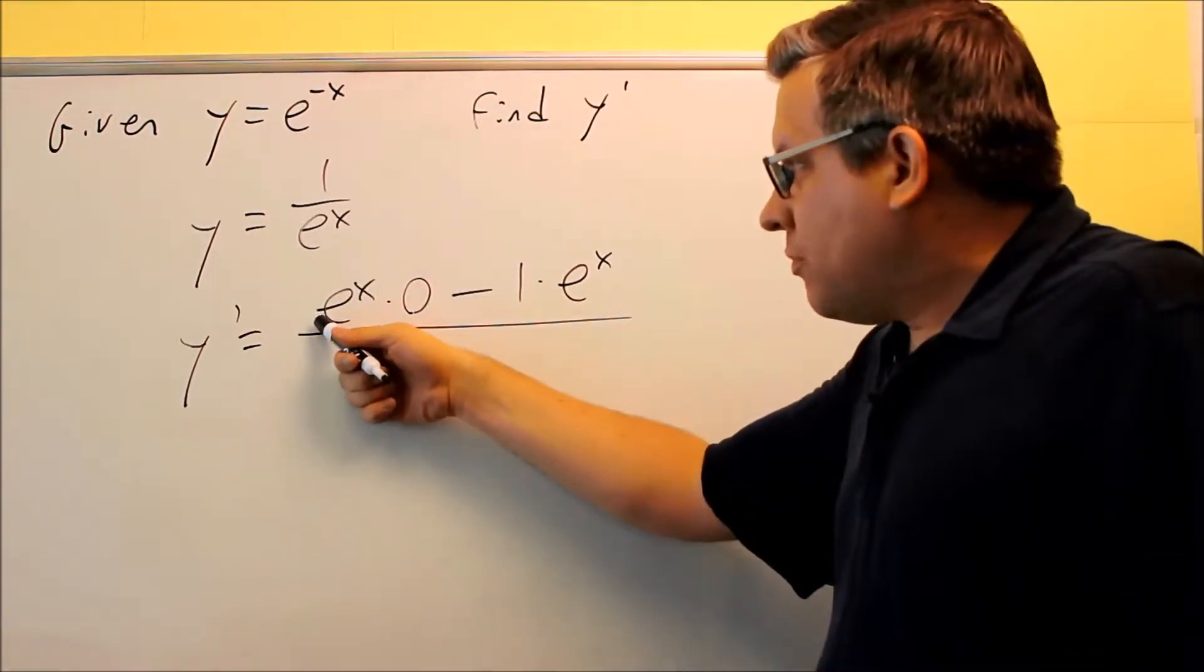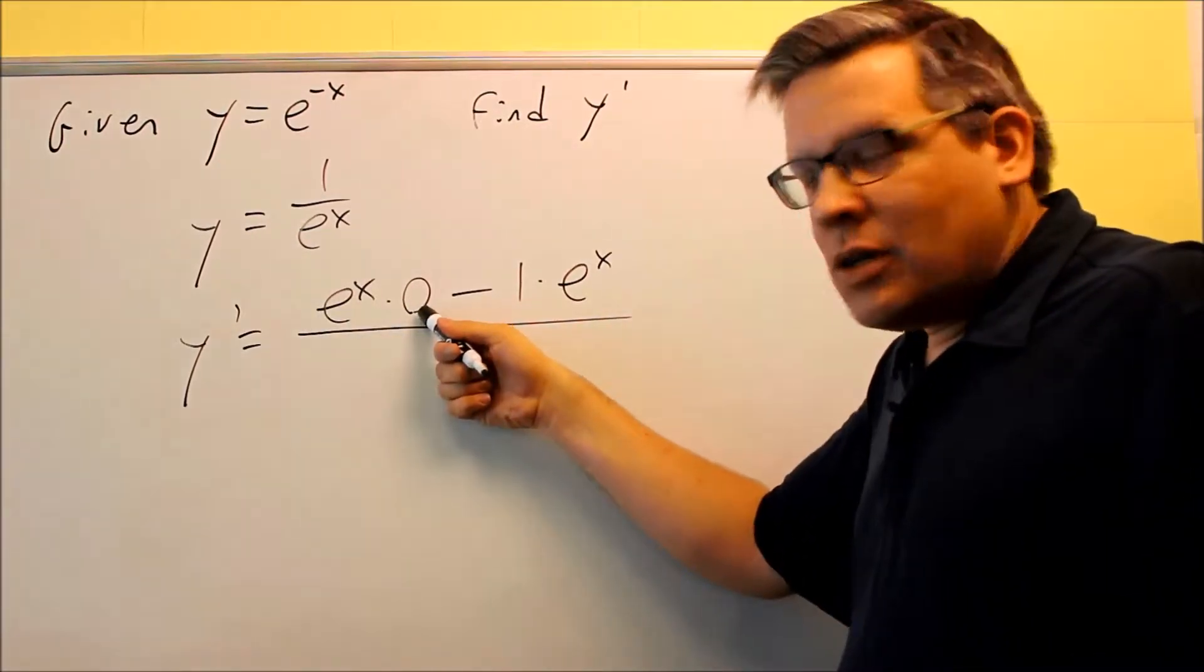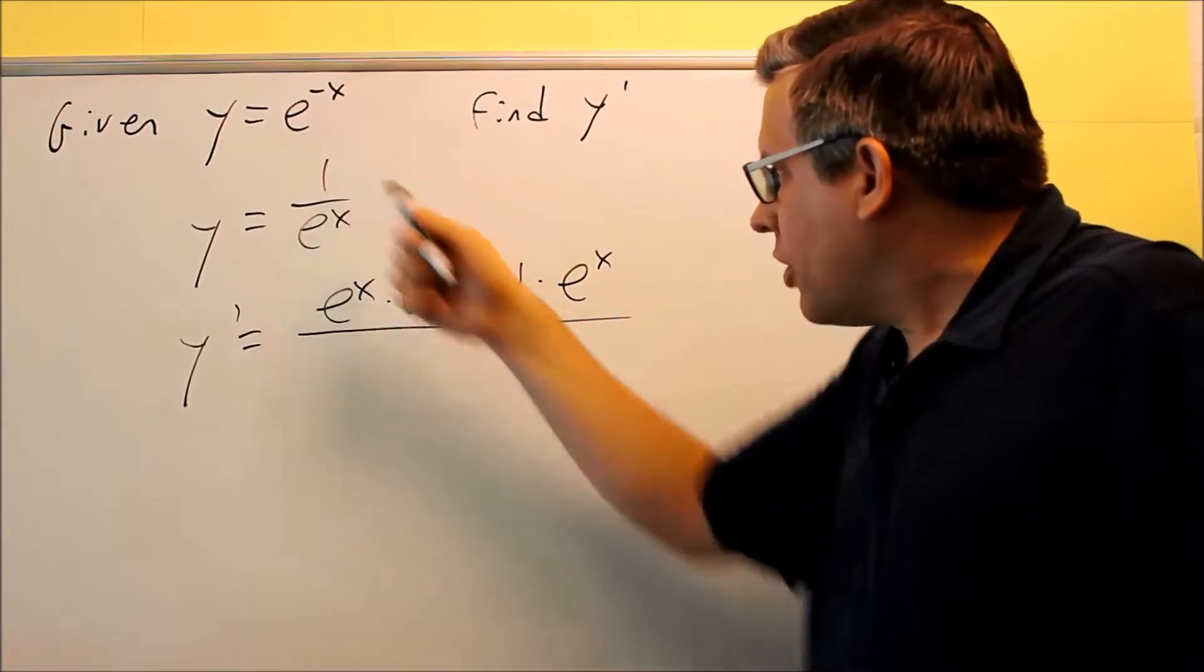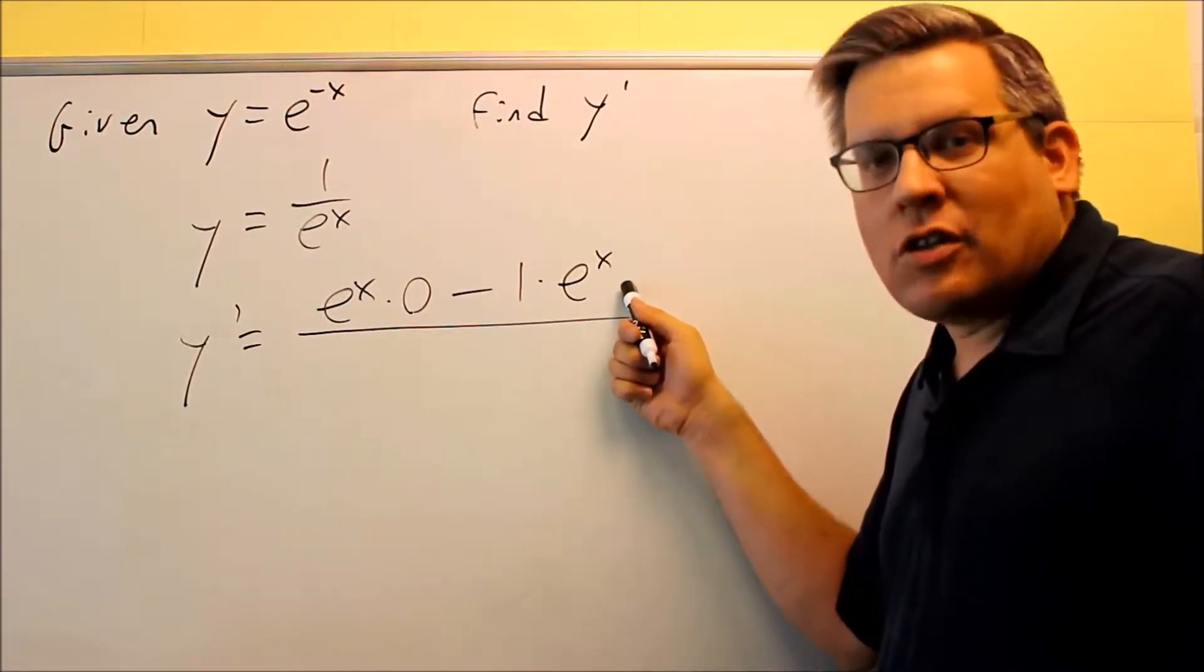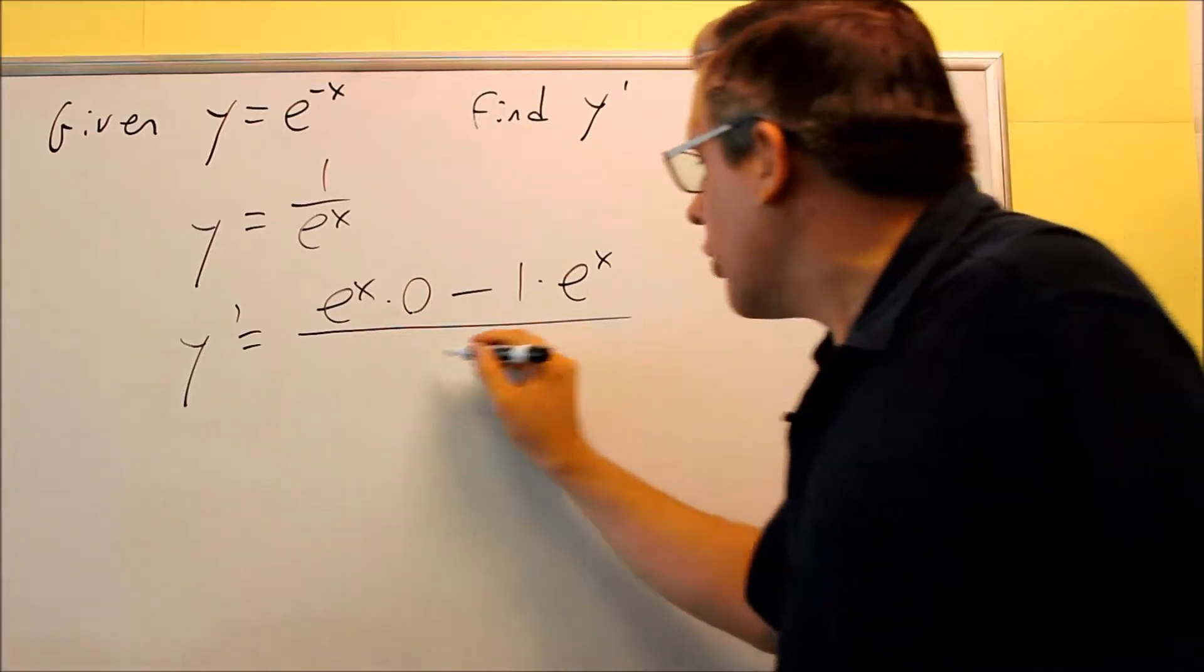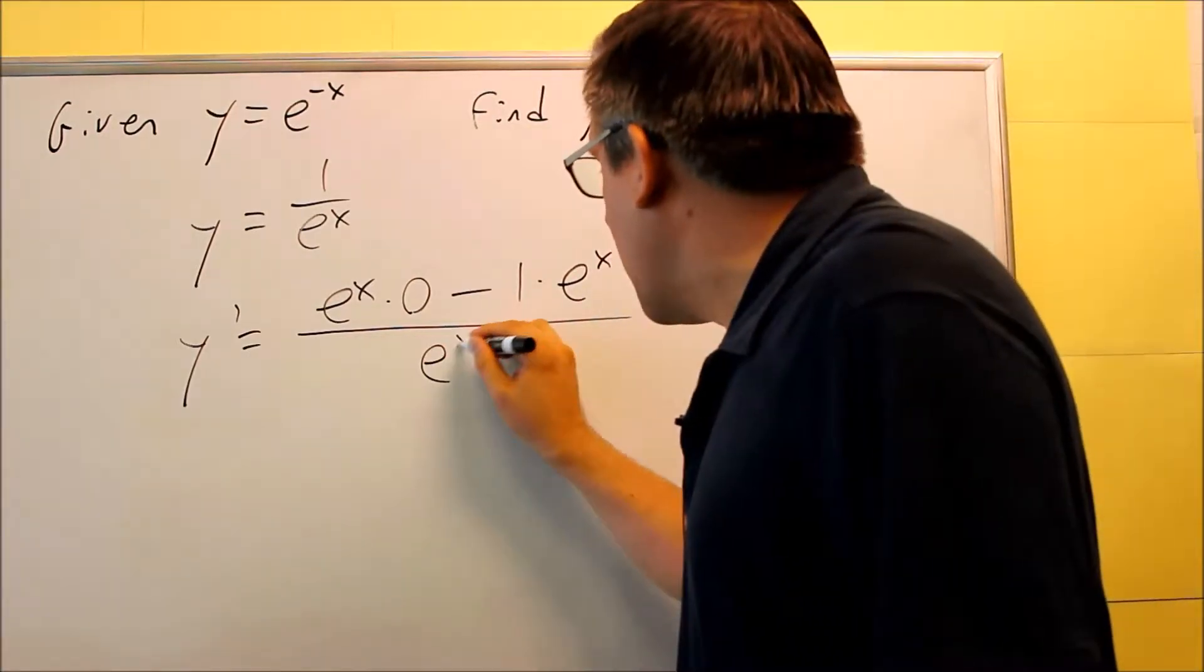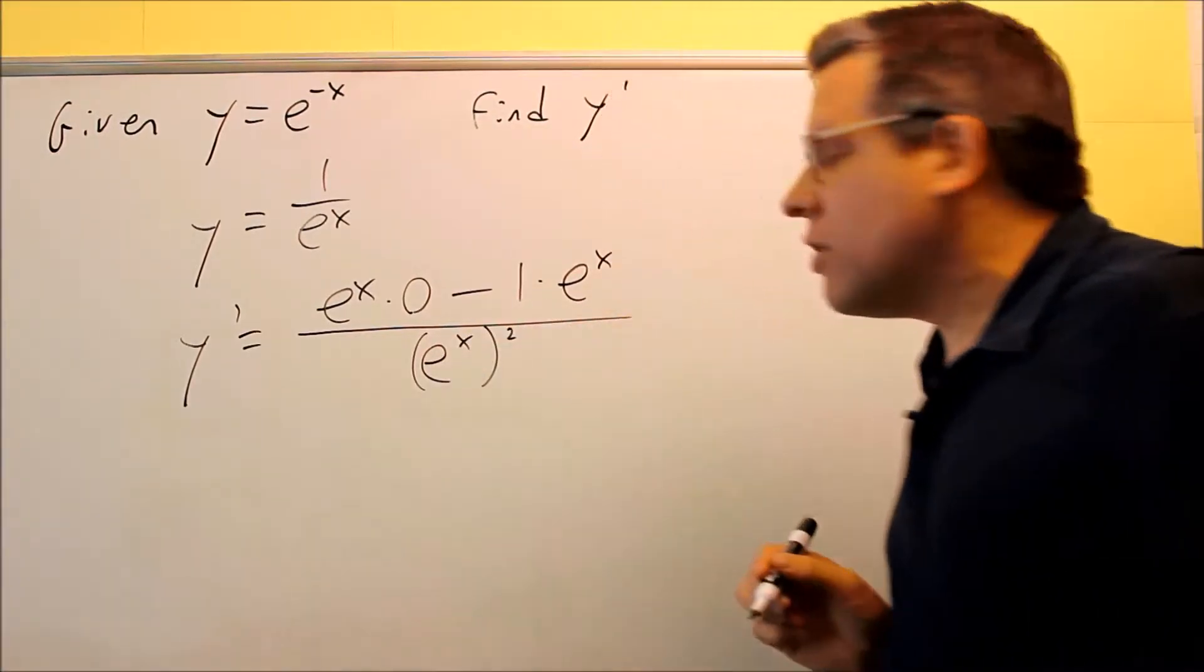So again, we have the bottom, the derivative of the top is 0, minus the top, which is 1. Derivative of the bottom is itself. Derivative of the e to the x is e to the x, over the bottom, squared. So e to the x squared.